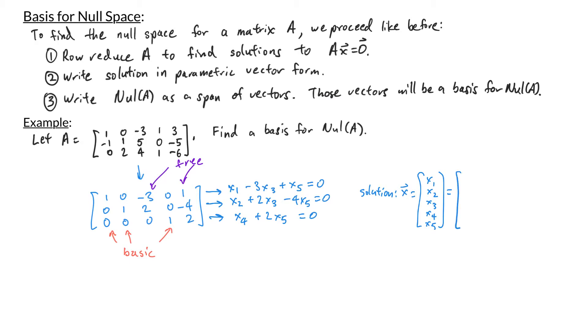So for x1, I can write this as 3x3 minus x5. x2, I can write as minus 2x3 plus 4x5. x3 is free, so I'm just going to write down x3. x4 is negative 2x5. And then lastly, x5 is free, so I just write down x5.